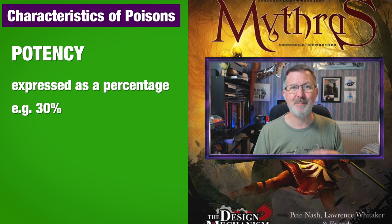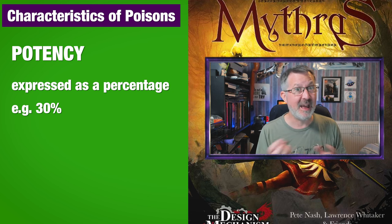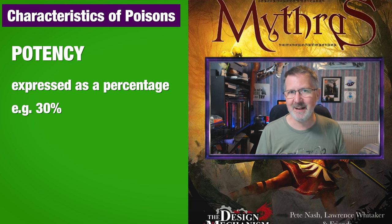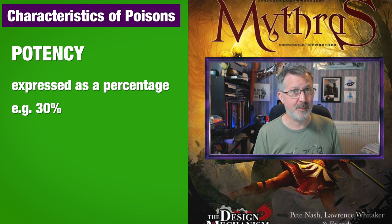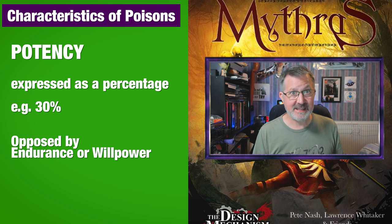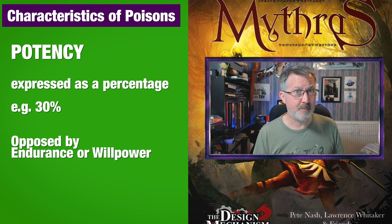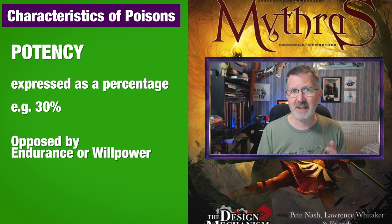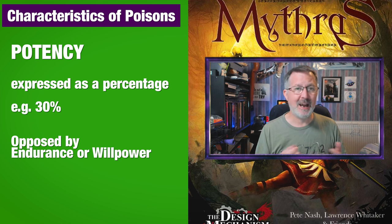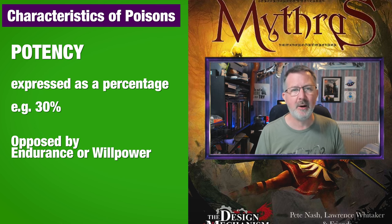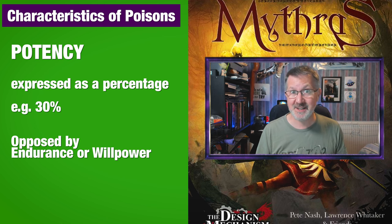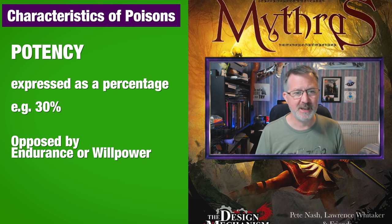But remember, this is going to be an opposed roll. The character also gets to roll either their Endurance or Willpower, depending on which stat is used to resist the poison. So if the poison has a potency of 30 and is opposed by Endurance, the GM rolls their percentile dice and if they get 30 or less the poison takes effect. However, the character will roll their Endurance or Willpower and see whether their score is higher than the roll of the potency.